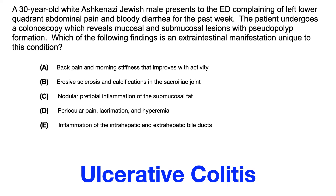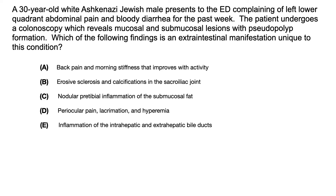All of choices A through E are associated with either or both UC or Crohn's, and this question is designed to train your brain to differentiate between the two. Choice A — back pain and morning stiffness that improves with activity — is, of course, referring to ankylosing spondylitis.